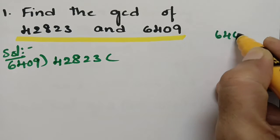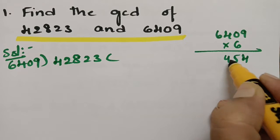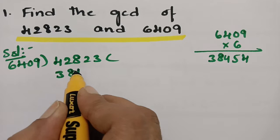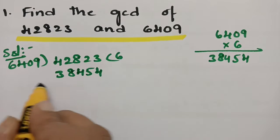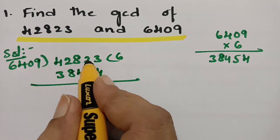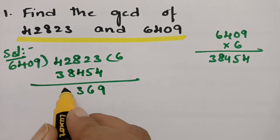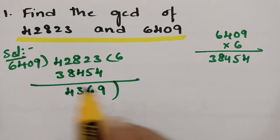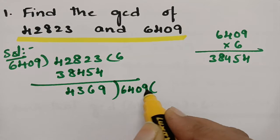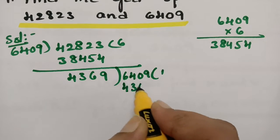So 6 times 6409 gives 38454. Bringing the next digit down, we get 6409 here, and for one time that gives 4369. After subtracting, taking a borrow, this is 4 and 2, giving us a remainder.